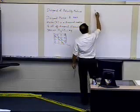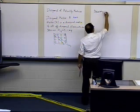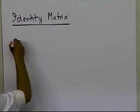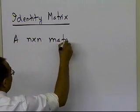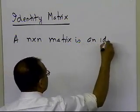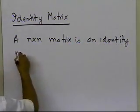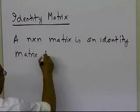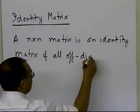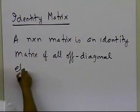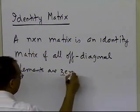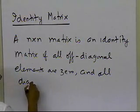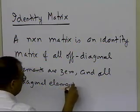Now let's look at the identity matrix, which is a very important matrix to understand as far as solving equations and finding inverses of matrices are concerned. An n by n identity matrix is actually a special case of a diagonal matrix. Since it's a special case of a diagonal matrix, all the off-diagonal elements are 0. But there's a restriction on the diagonal elements — all diagonal elements are 1.